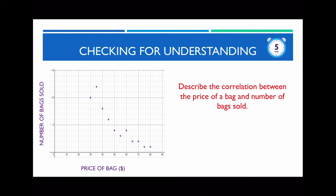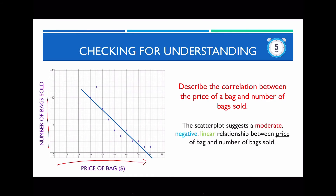Now have a go at describing the correlation for the price of a bag versus the number of bags sold. To guide your answer, first draw an imaginary line of best fit to see how close the points are. In this case, the points are kind of close but not very close like the previous example, so I'd use the word 'moderate' to describe the strength. As the price of a bag increases, the number of bags sold decreases — so this is a negative relationship, and it's quite linear. Answer: the scatter plot suggests a moderate negative linear relationship between price of bag and the number of bags sold.